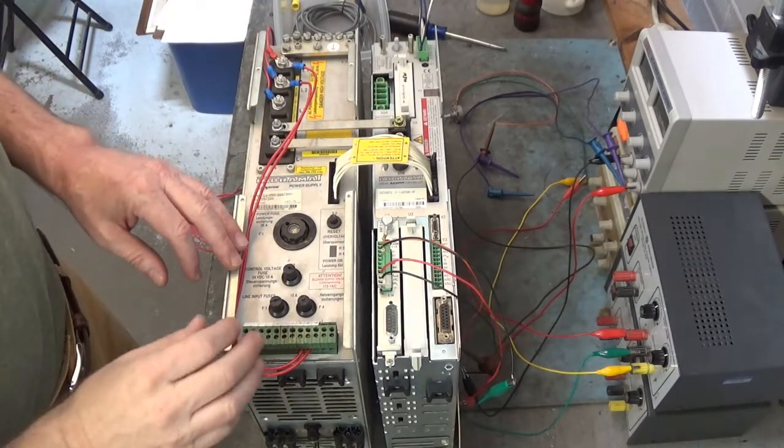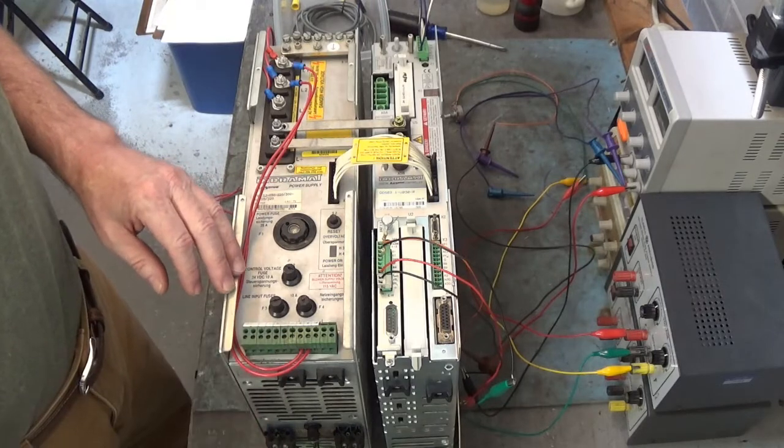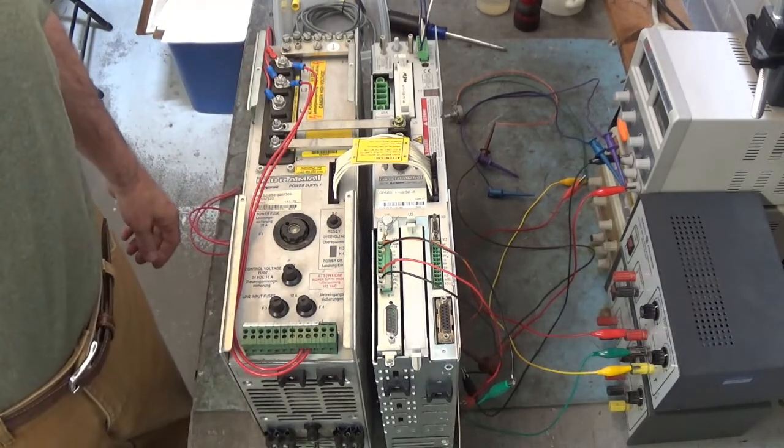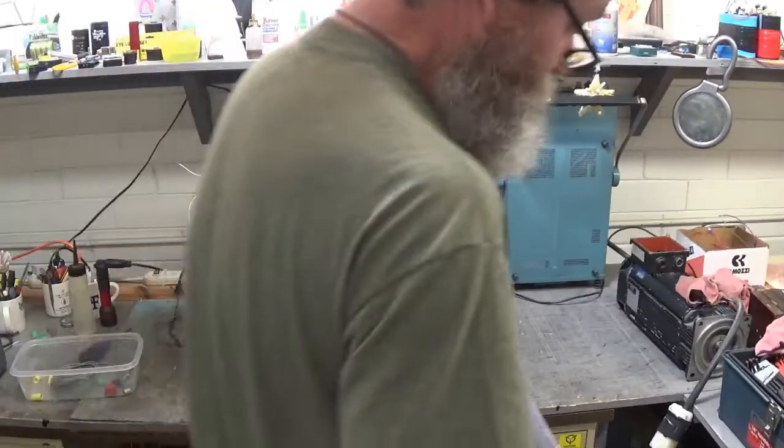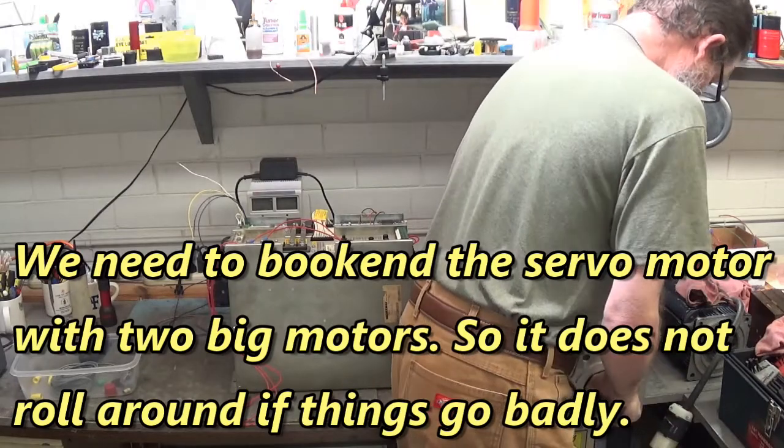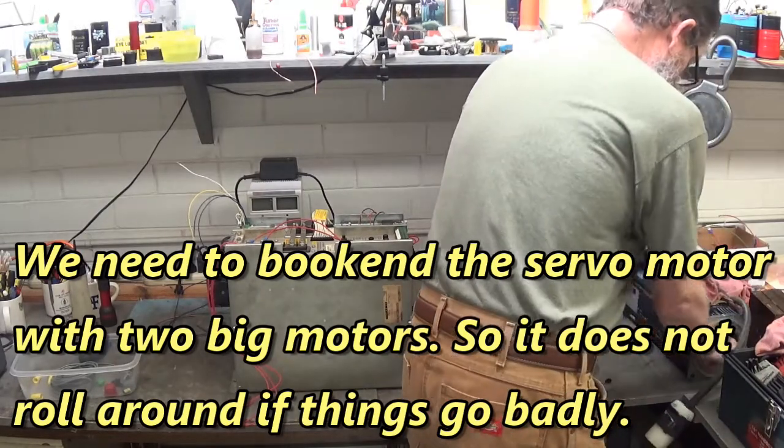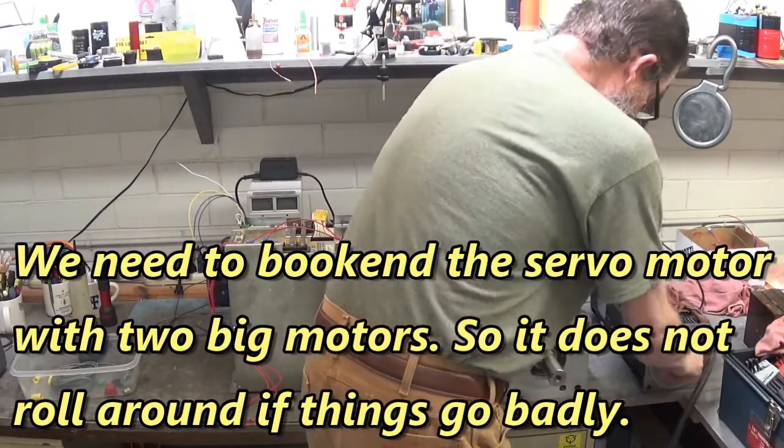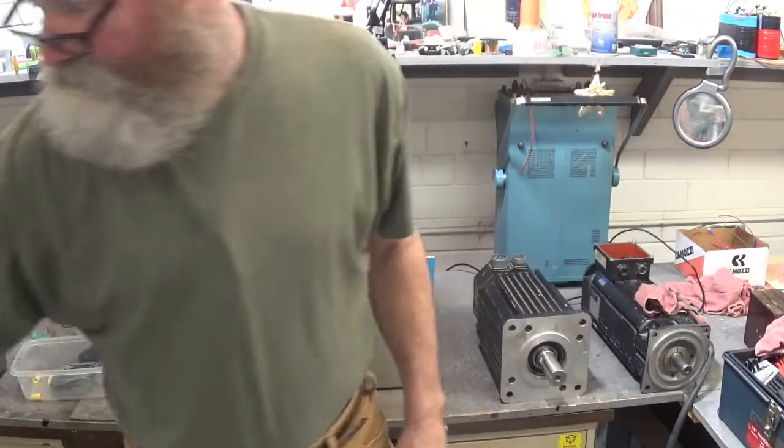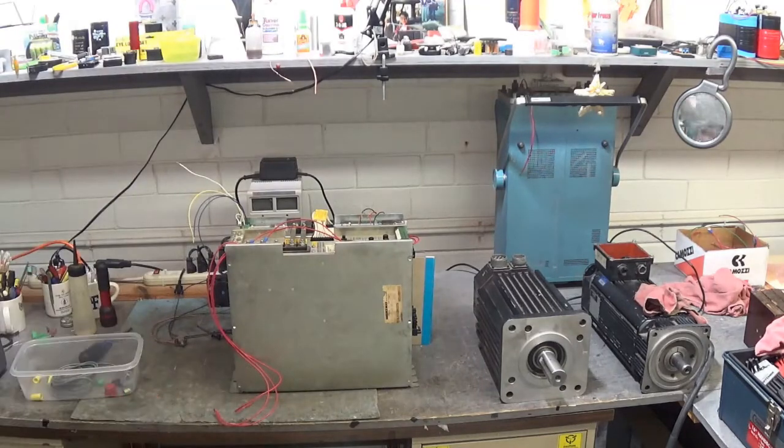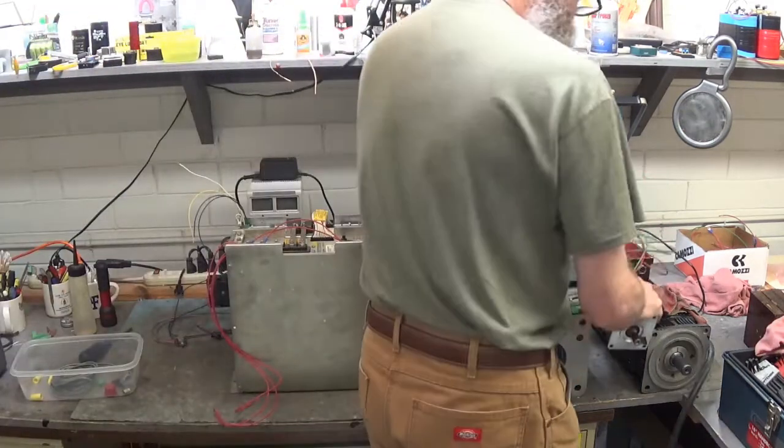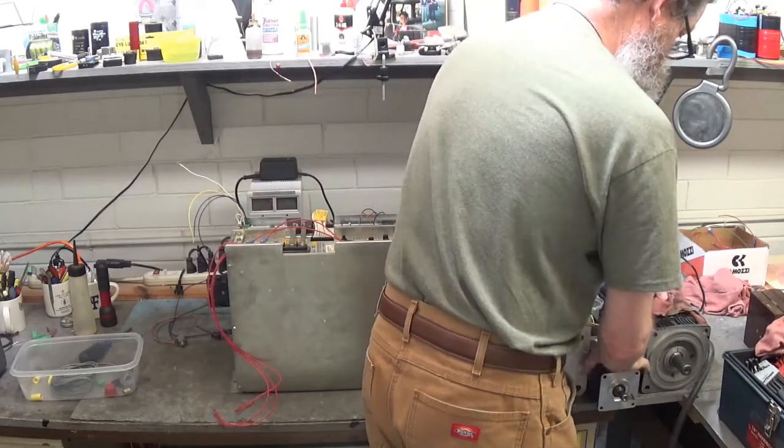I'll move the camera out of the way. We'll set the servo motor down here and hook up the line voltage. These two big motors are going to book into our servo motor so we don't roll them out if things go badly. There's our little servo motor we're going to connect to that servo drive.